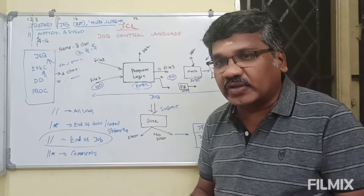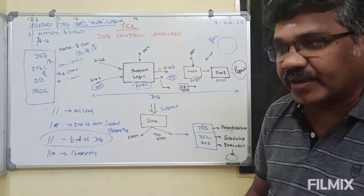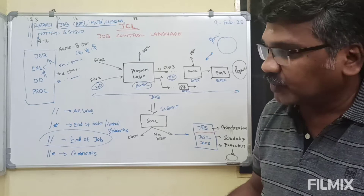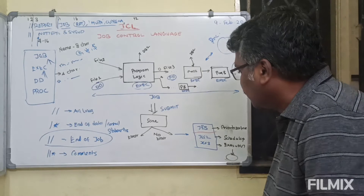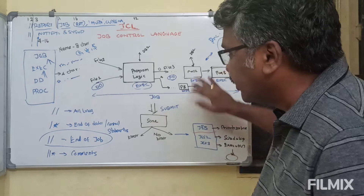Now, what JES will do: if a number of jobs are coming, it will prioritize the jobs — which one is to be executed first, which one is next. Once prioritized, it schedules them, and then they get executed. The outputs will be sent to wherever they need to be routed. This is about coding a job, submitting, and processing — this is the flow.